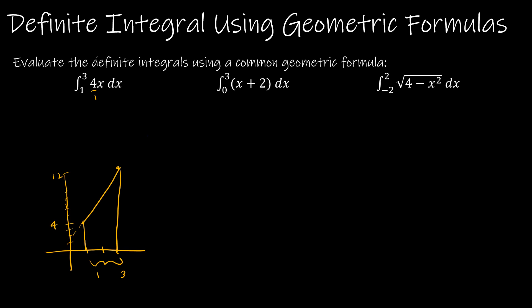The area of a trapezoid is one half times the height times the sum of the bases. In a trapezoid, the height is at a right angle, and the bases are the two sides that are parallel. This base would be 4, this base would be 12, and the height would be 2. So to find this area: one half times 2 (the height) times the sum of the bases, 4 plus 12. One half times 2 is 1, and 4 plus 12 is 16, and that's my final solution.